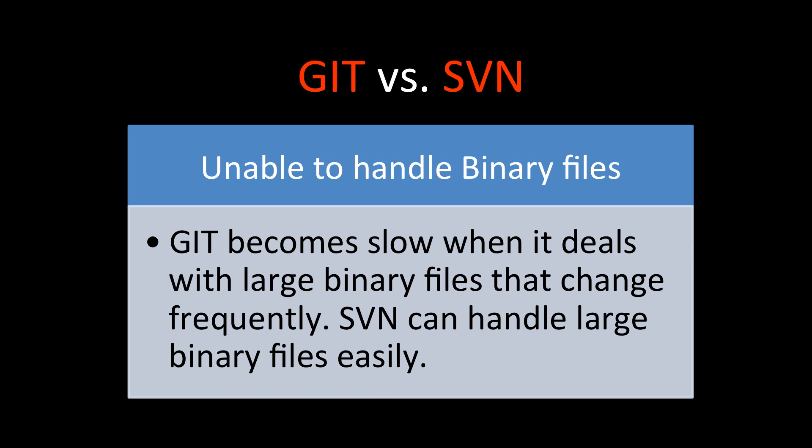Git is slow when dealing with large binary files that are changing frequently, though if they do not change frequently you can keep storing them. Whereas SVN can handle large binary files very easily, so you can use SVN for that kind of scenario.